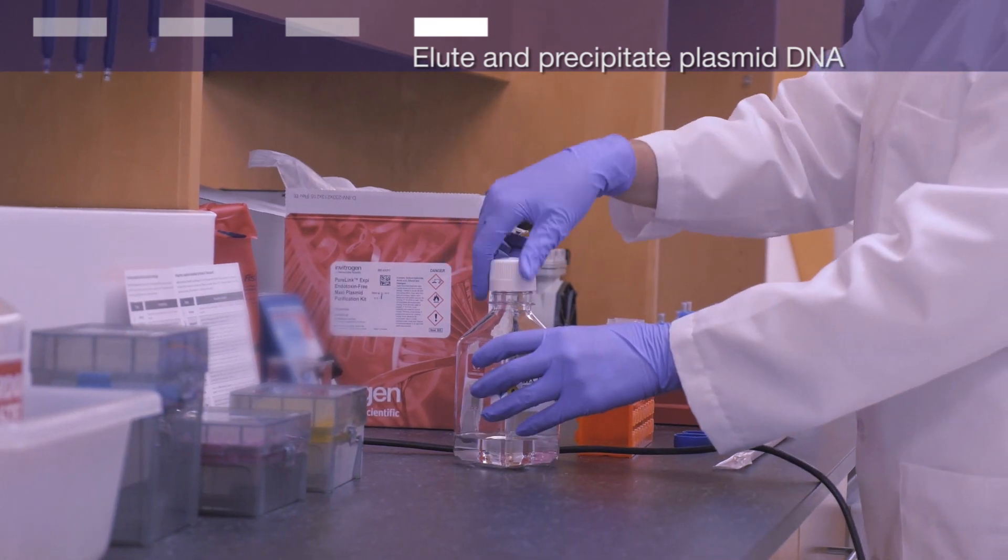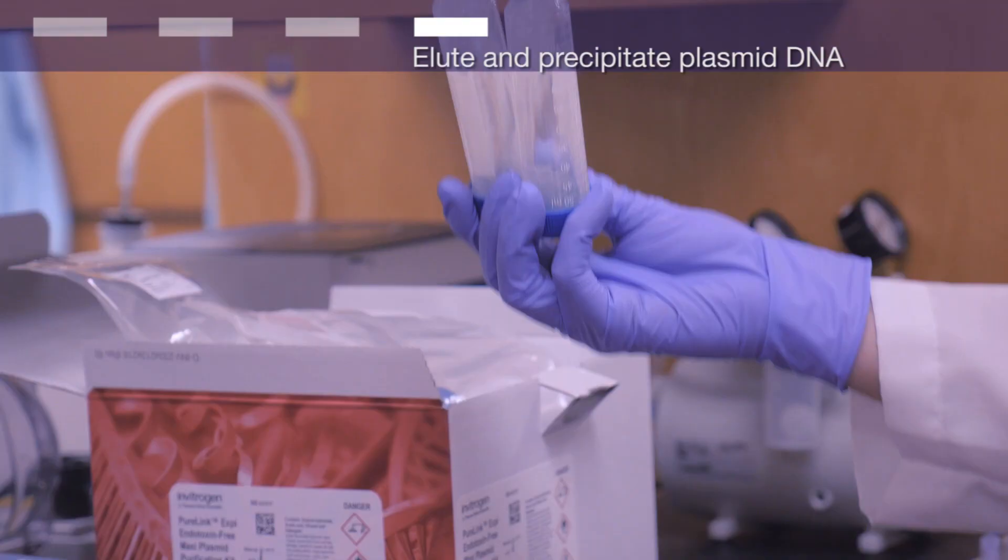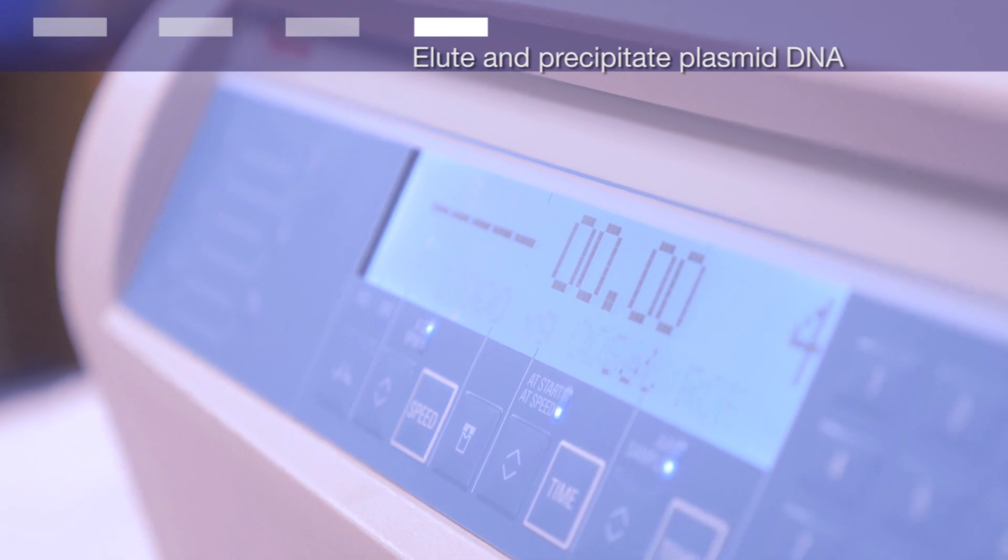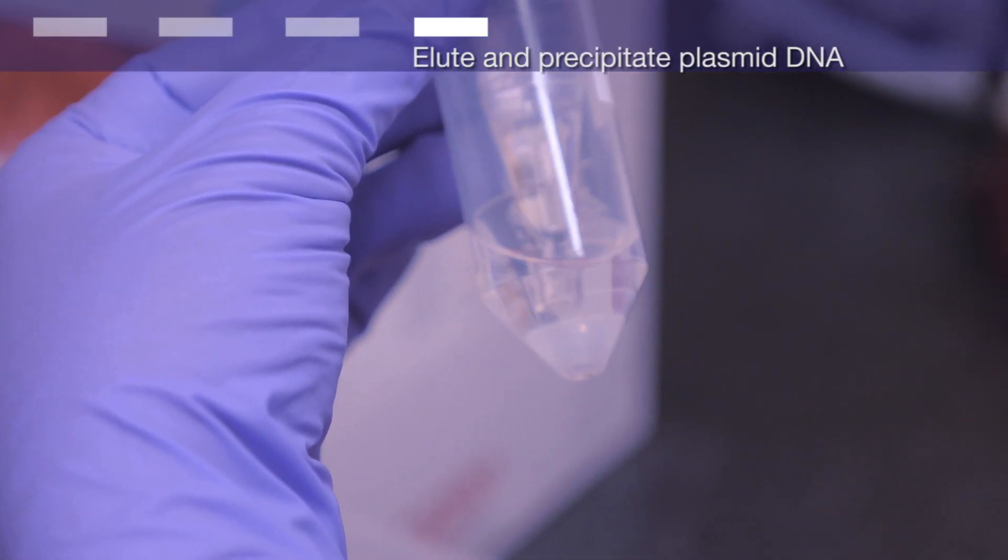Add 10.5 milliliters or 0.7 volumes of isopropanol to the eluate and mix well. Centrifuge at greater than 12,000 times G for 30 minutes at 4 degrees. Remove and discard the supernatant.